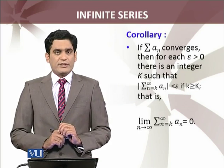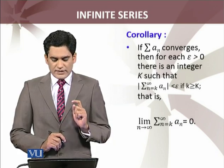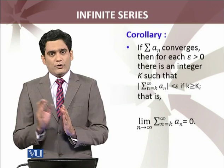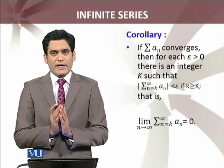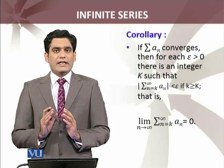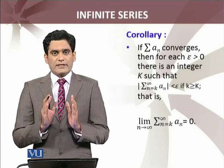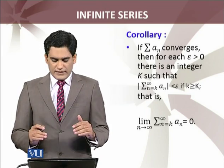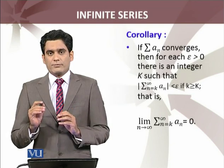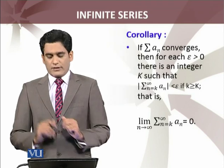If summation a_n converges, then for each epsilon greater than 0, there is an integer K, such that summation n starts from k to infinity, that absolute value should be less than epsilon, if k is greater than or equal to capital K. The sum of the series must be absolute value less than epsilon, that is, limit n approaches to infinity, summation n starts from small k to infinity of the series terms a_n. It equals zero.